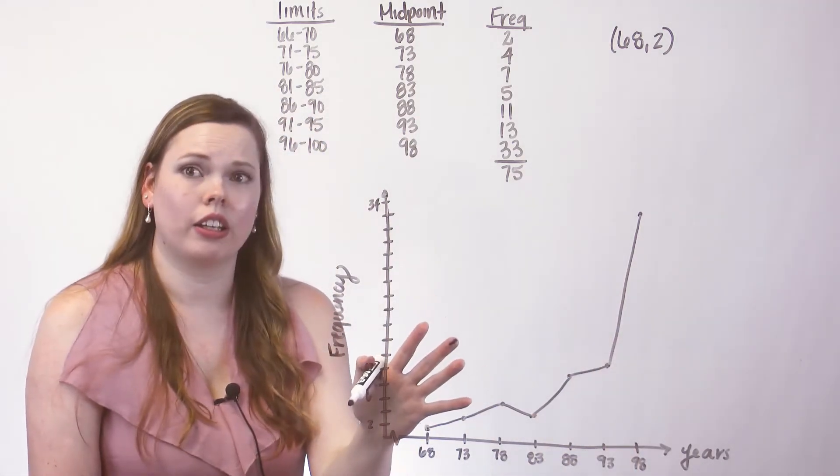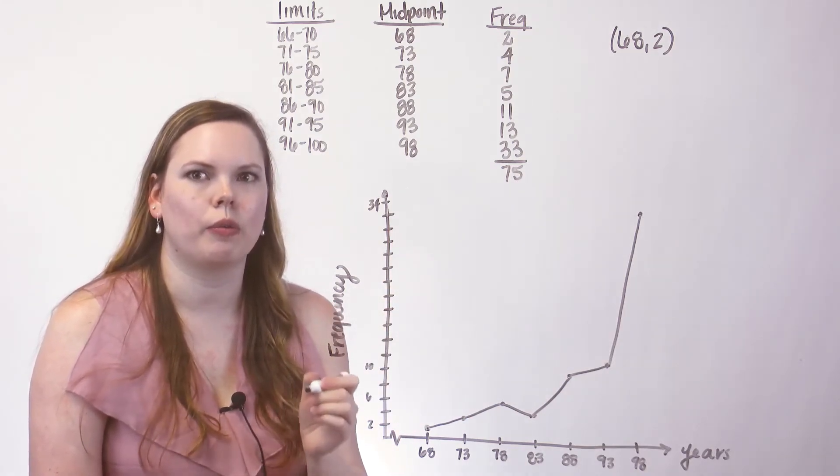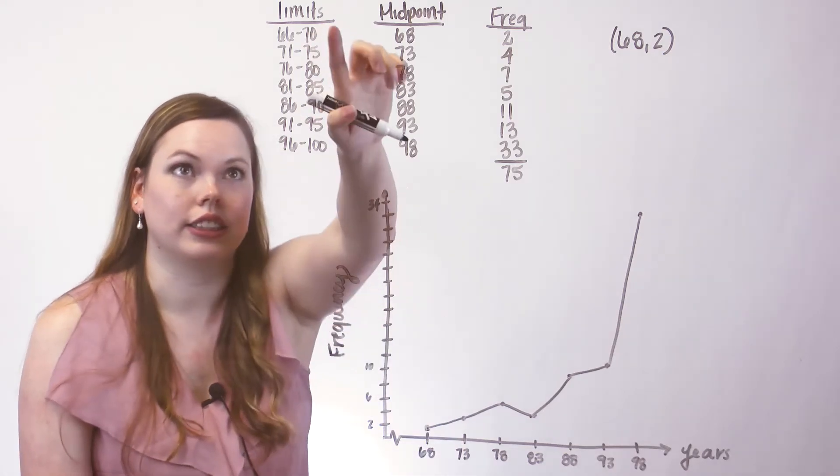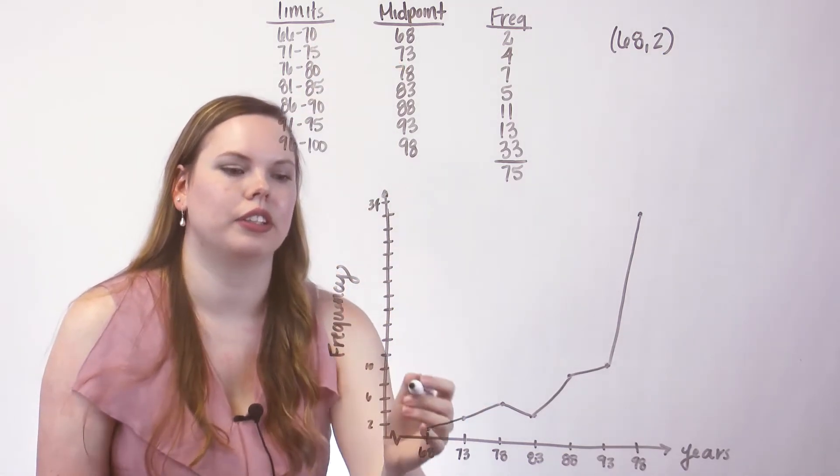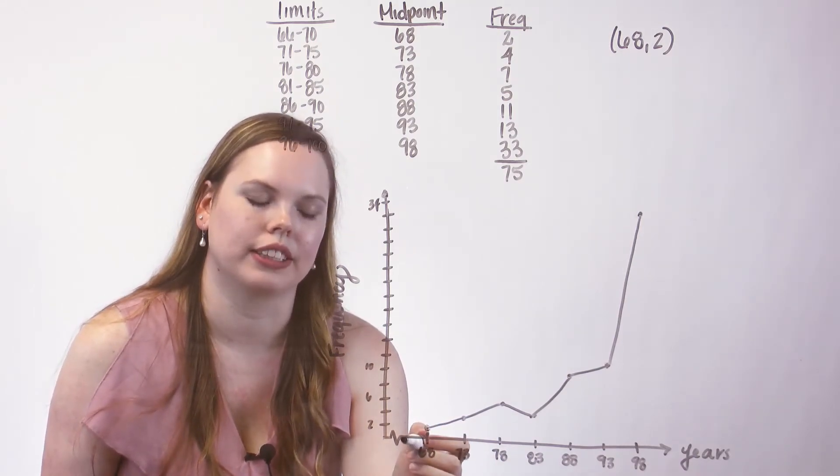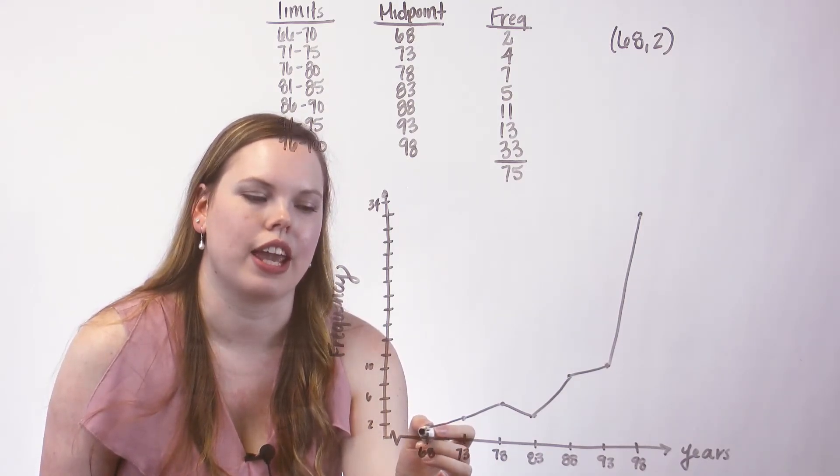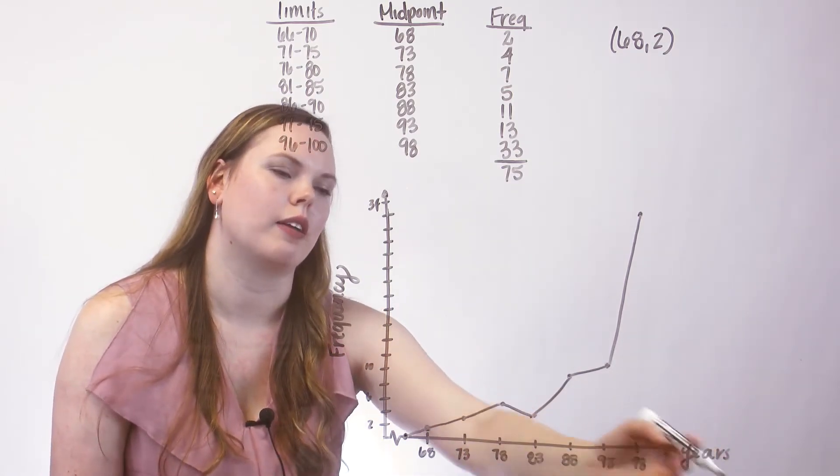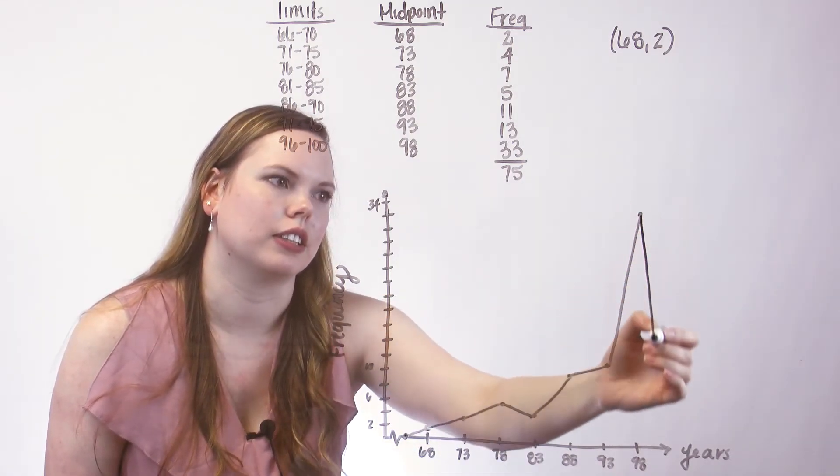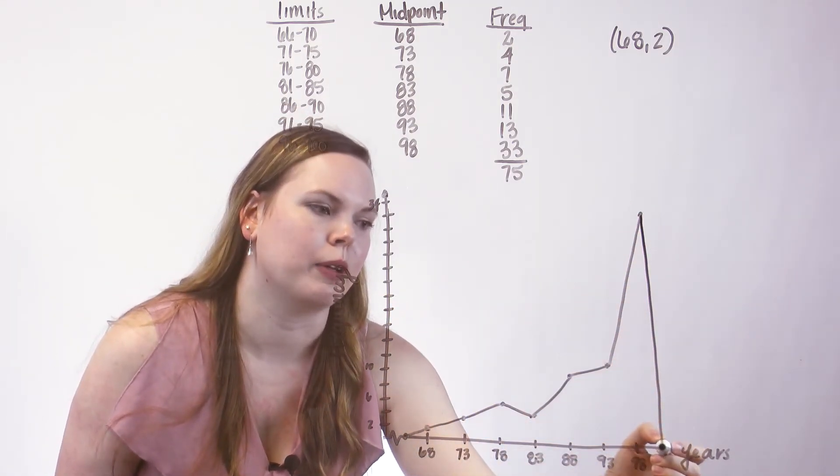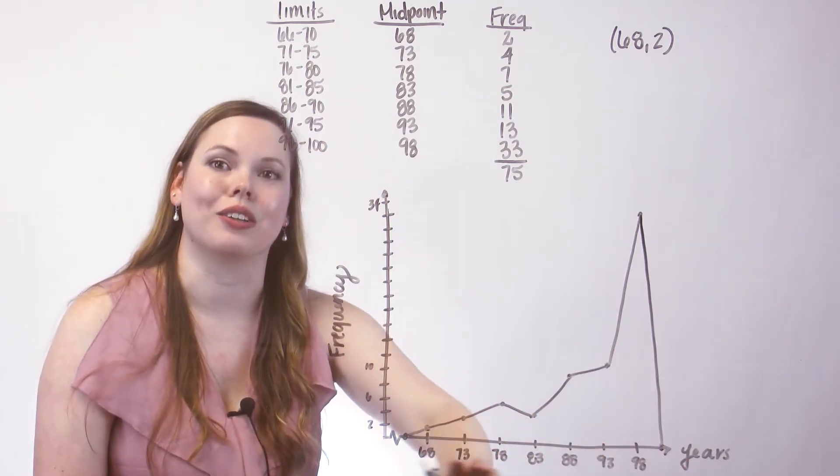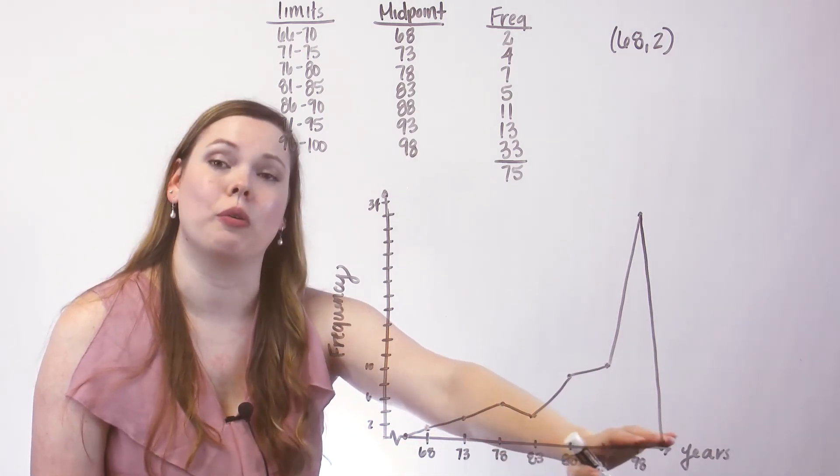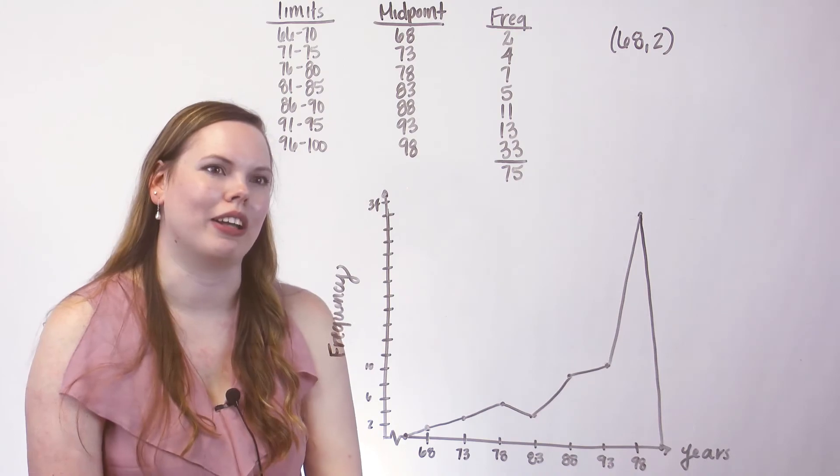And this is not a polygon yet though, because it's not closed. And we also know that our data begins here at 66 in our case. So there's actually a class that exists right below this class with a frequency of zero. So that's where it connects. And there is a class right above this class with a frequency of zero. So this is going to connect it down to that midpoint there. And now it's a closed figure with those dots connected and the horizontal axis forms that last side of the polygon.